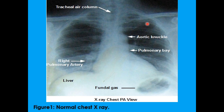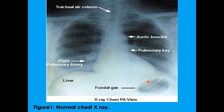In the PA view, this is the patient's left which appears right to us, and this is his right which appears left to us. The structures that are visible are the tracheal air column, the pulmonary bay or hilum, the aortic knuckle representing the aortic arch, and the right pulmonary artery. This is the liver, which is below the right hemidiaphragm separating the lung field from the abdominal viscera. This is the fundal gas, and this is the left hemidiaphragm which separates the abdominal cavity from the base of the heart and lung field.